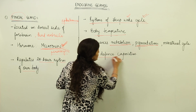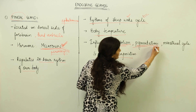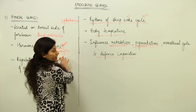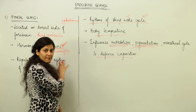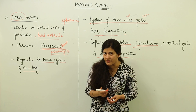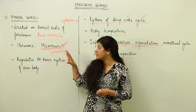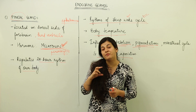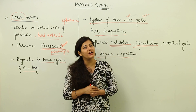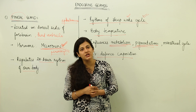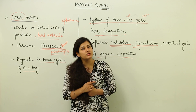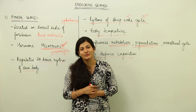Along with the sleep-wake cycle, melatonin also takes care of body temperature, the menstrual cycle, defense capacities, metabolism, and pigmentation. Such a small gland plays a very important role — it secretes the hormone responsible for maintaining the circadian rhythms of the body, which are critical for various physiological functions, of which the menstrual cycle is especially important.